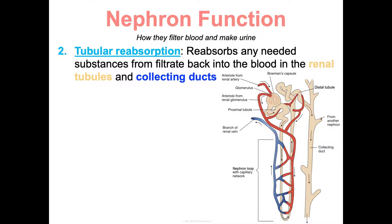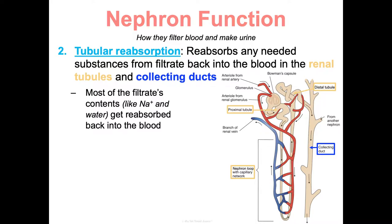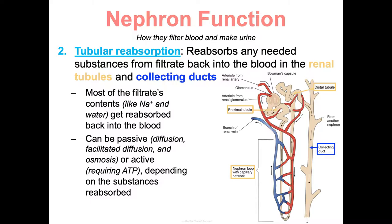Step two is tubular reabsorption. As filtrate moves through the renal tubules, needed substances are reabsorbed back into the capillaries. Most of the filtrate's contents — like sodium and water — get reabsorbed back into the blood. This occurs in the renal tubules and collecting ducts, and can be a passive process via diffusion, facilitated diffusion, and osmosis, or active transport requiring ATP, depending on what's being reabsorbed.